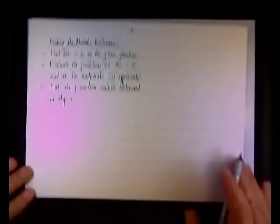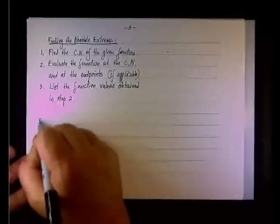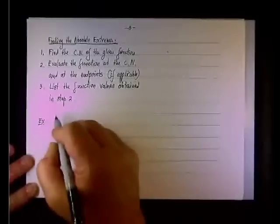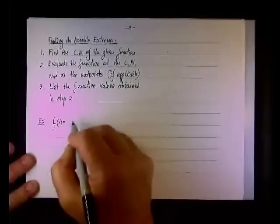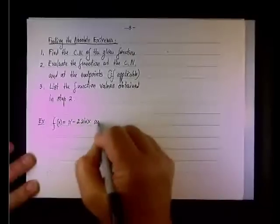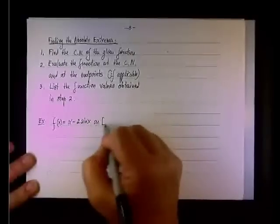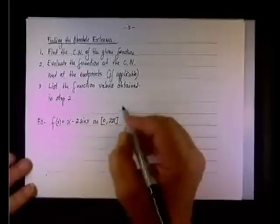Okay, so this is the procedure. Let's just reinforce that, let's do one more example. We have f of x equals x minus 2 sine x on the closed interval zero to two pi. What we'll find, we want to find the absolute extrema.